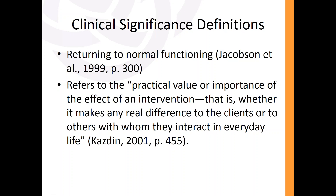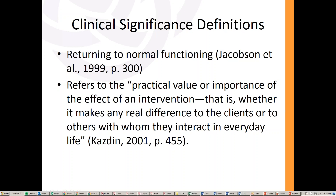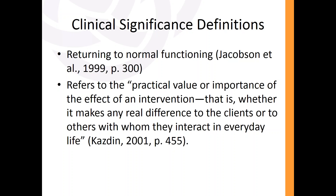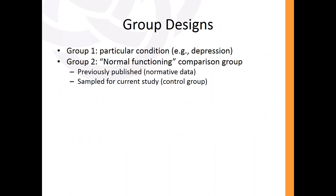Both of these definitions are going to be important, and we have to keep that in mind as we go through the entire presentation. At the end, I'll tie this all back together with how we actually measure these things. So let's talk about traditional research and statistical significance. Basically, this is where group designs come into play, where we're looking at what we'll call group one — a specific condition that a researcher might be interested in assessing to determine whether an experimental treatment might be somehow beneficial.